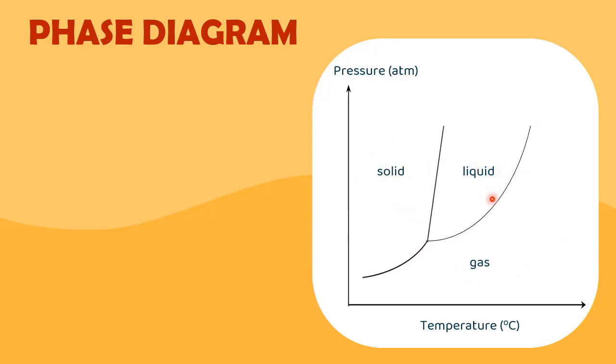This diagram will provide us with two types of information. The first information is on the regions separated by the lines in which they represent the conditions of pressure and temperature that are most likely to produce a solid, a liquid or a gas.